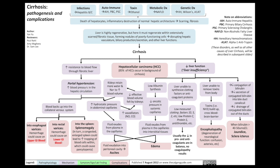Another consequence of portal hypertension is increased hydrostatic pressure in the abdominal capillaries, which results in fluid being extruded from the plasma of these capillaries into the interstitial tissue. This includes the external tissues around the liver, such as the skin, resulting in edema, and also the peritoneal cavity, where fluid exudation results in ascites.